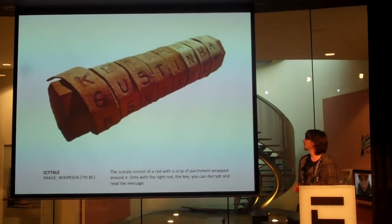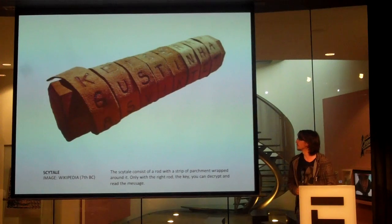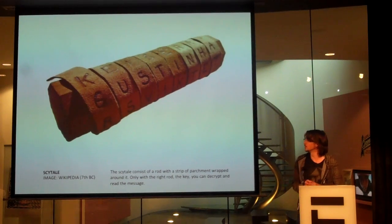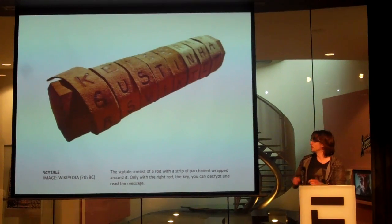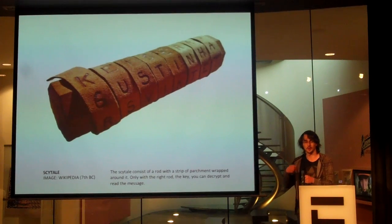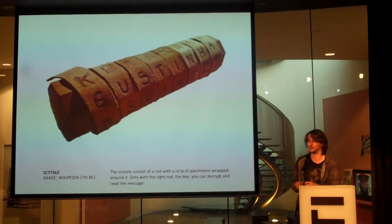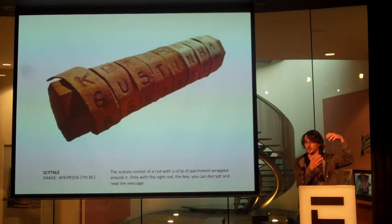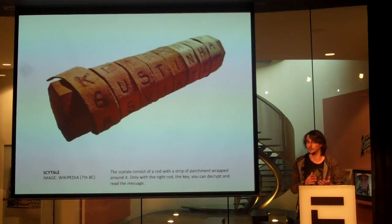This is an even more complicated form of cryptography. You can use a strip of parchment, wrap it around a rod, and then write a message on it. When you unwrap it, it's no longer readable — you get a string of letters and you need to know the order in which to read them.